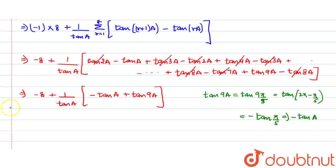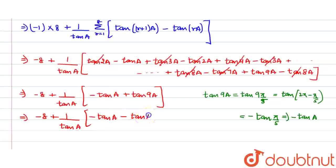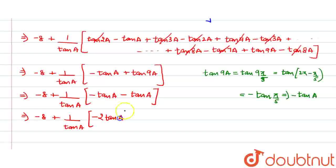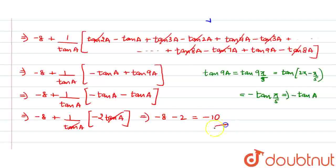We will put this back in the equation. This comes out to be −8 plus (1/tan(a)) multiplied by (−tan(a) − tan(a)), which is −8 plus (1/tan(a)) into (−2·tan(a)). Then tan(a) and tan(a) get cancelled, so we are left with −8 − 2, and the answer comes out to be −10.